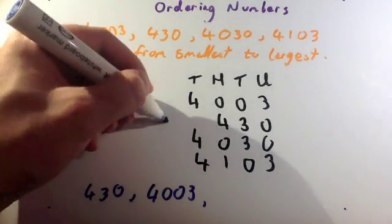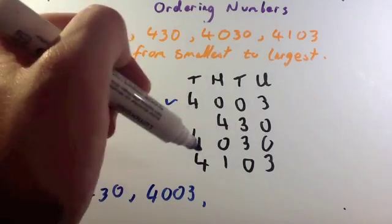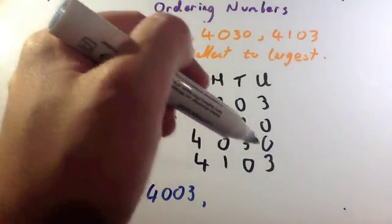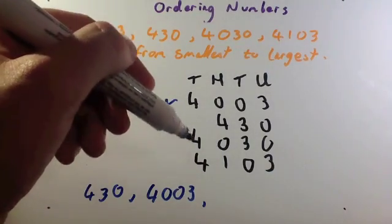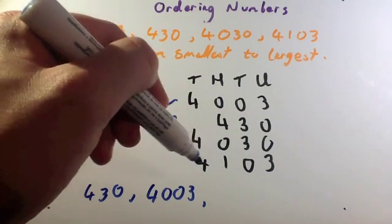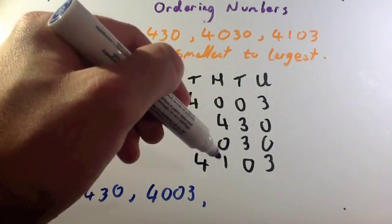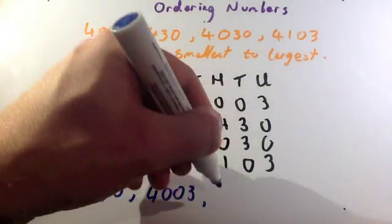So, we've done this one and we've done this one. We've got two numbers left: 4,030 and 4,103. So, let's figure out which one's the next smallest. Well, they've both got fours in the thousands column. One of them's got a zero in the hundreds, and one of them's got a one in the hundreds. Therefore, the one with the one in the hundreds must be larger. So, 4,030 is the next smallest number.